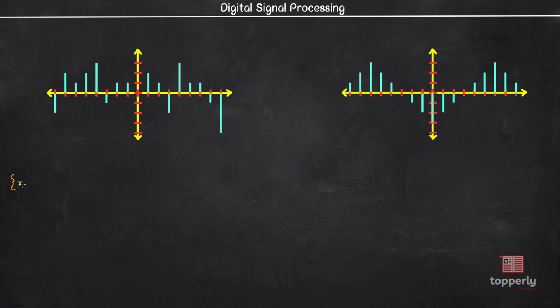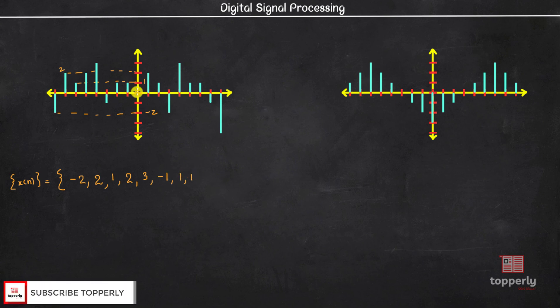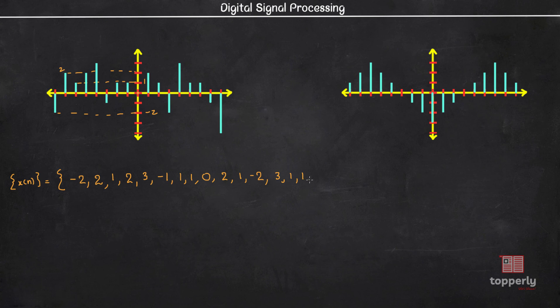So let us first represent this signal as a sequence. So we have x of n equal to minus 2, 2, 1 and likewise 2, 3, minus 1, 1, 1, 0, 2, minus 2, 3, 1, 1, minus 1 and minus 3. And let us put the arrow mark to show the position of x of 0. So this is the complete sequence for this discrete signal.